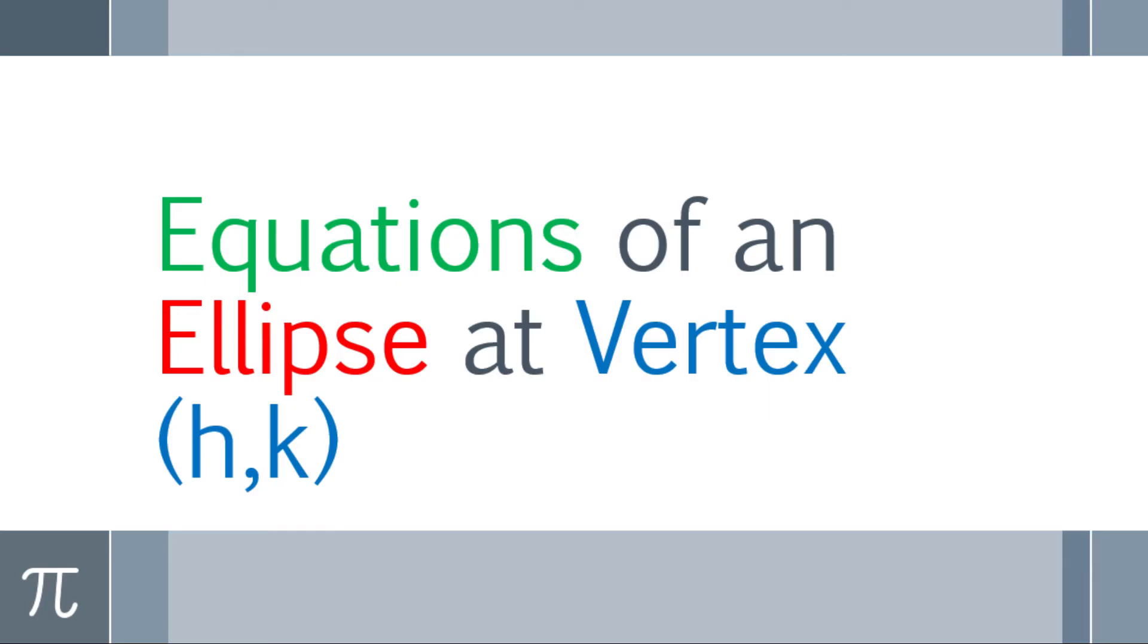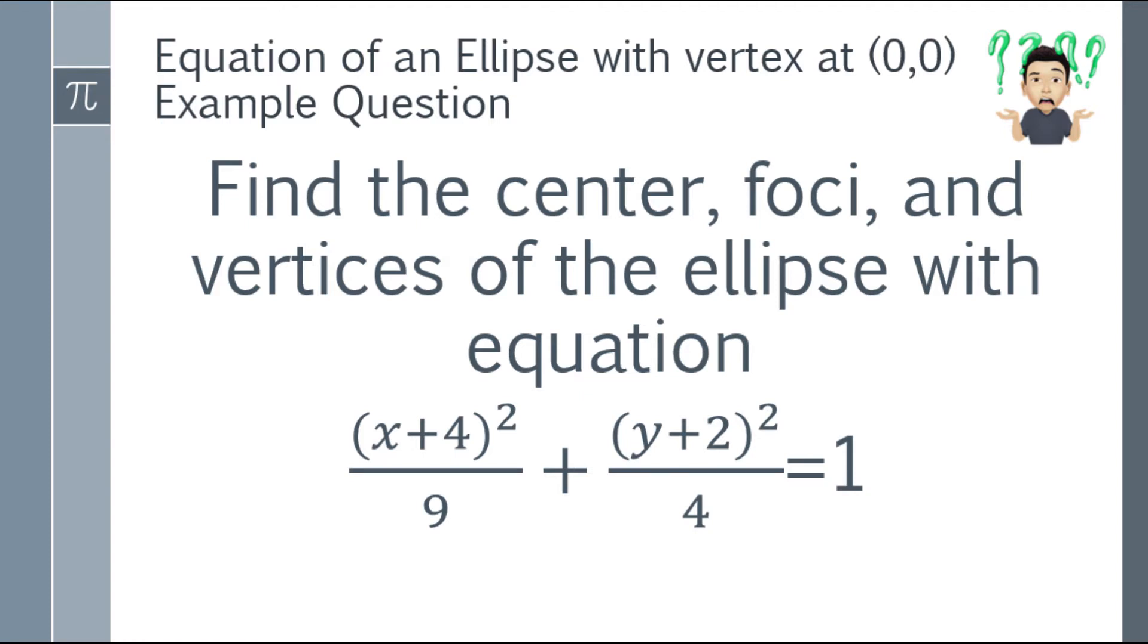So let's have an equation for an ellipse with vertex at h,k. First one, we have to find the center, foci, and vertices of the ellipse with equation: the quantity x plus 4 square over 9 plus the quantity y plus 2 square over 4 equals 1.